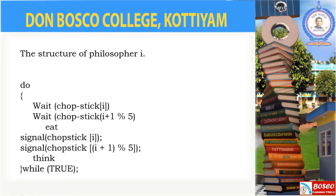Next, the adjacent chopstick is represented as i plus 1 mod 5 — that represents the adjacent chopstick. Then wait of chopstick of i plus 1 mod 5, and then the adjacent chopstick is acquired. The eat process can then enter.